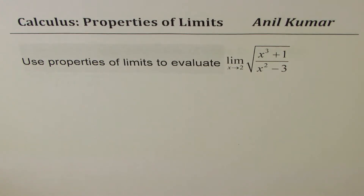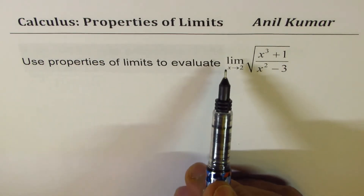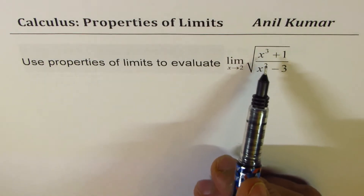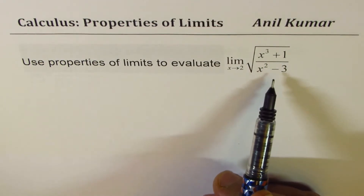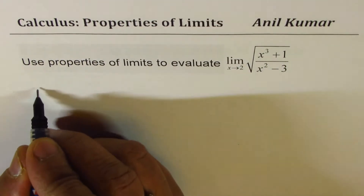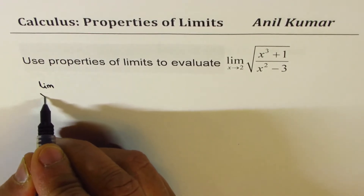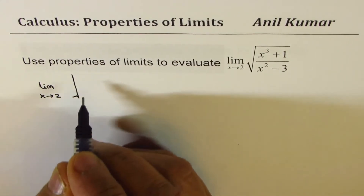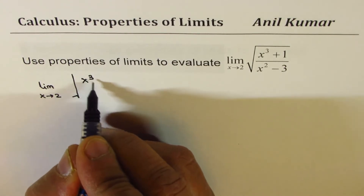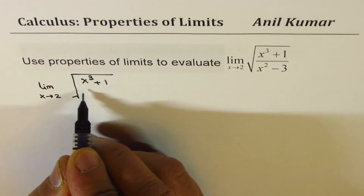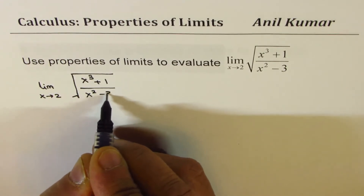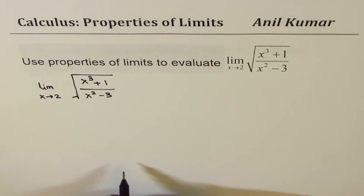The very first example is to use properties of limits to evaluate the limit when x approaches 2 for the square root of x cubed plus 1 divided by x squared minus 3. So we need to find what is the limit when x approaches 2 for that function.